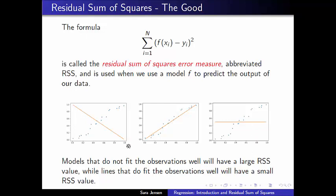This line, which we look at and intuitively know is a poor representation of the observations that we're seeing, is going to have a large overall residual sum of squares error measure.